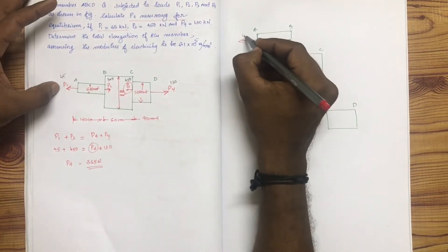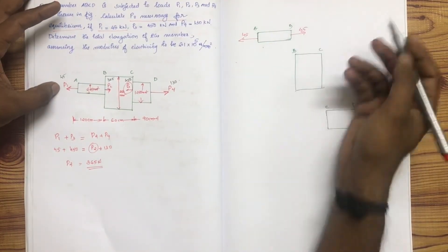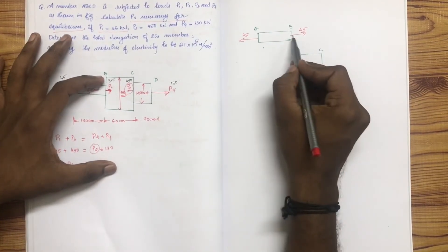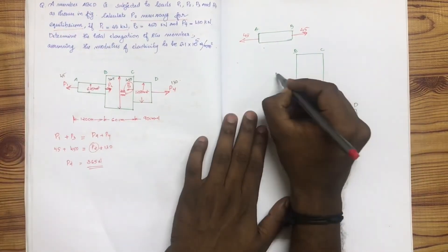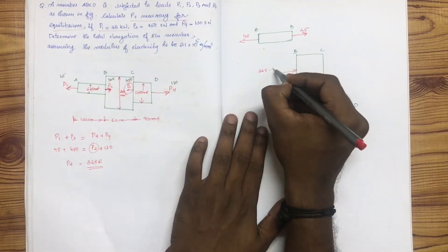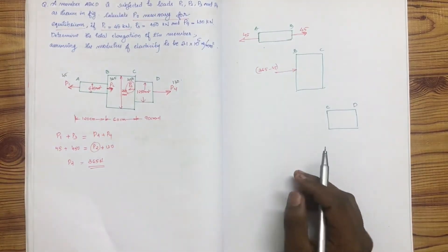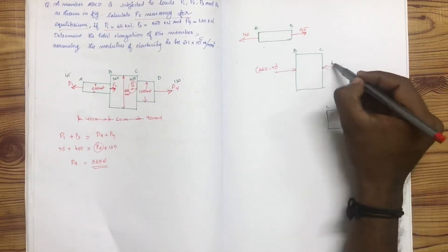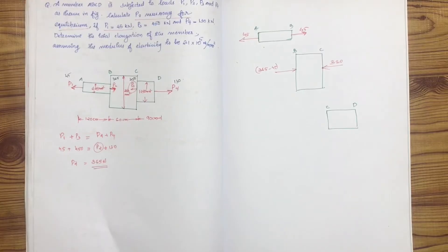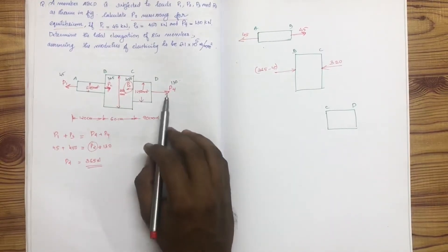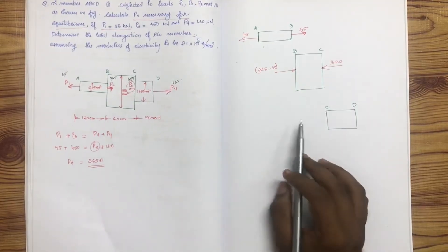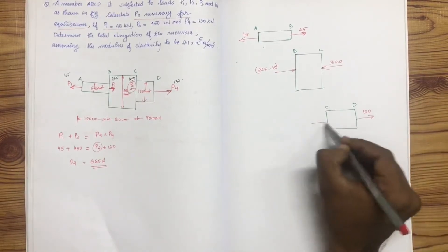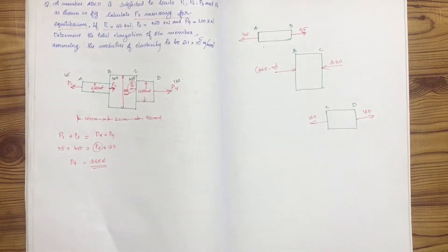Now, P1 = 45. The right side: 365 minus 45 — same direction — 365 minus 45 is the same. Equal to 1.3. Equal to the opposite direction, equal to 1.3, equal to 0.